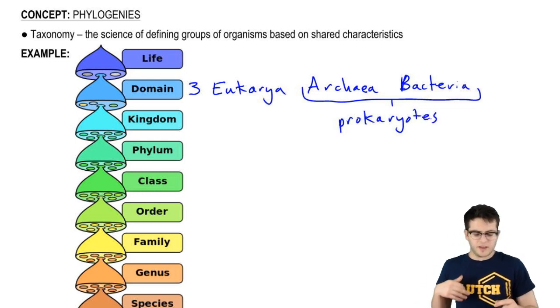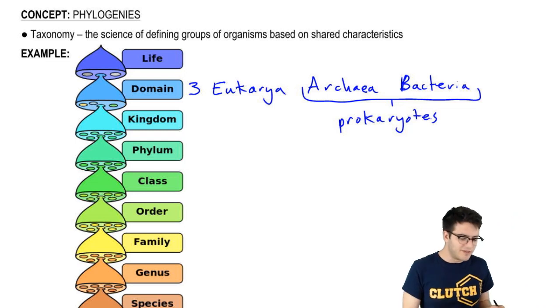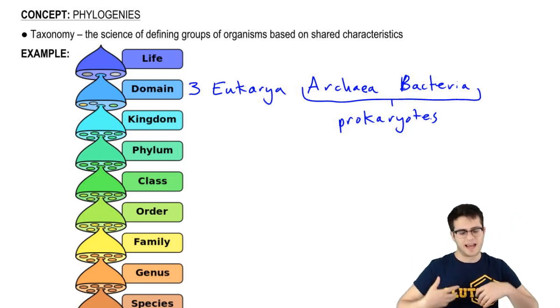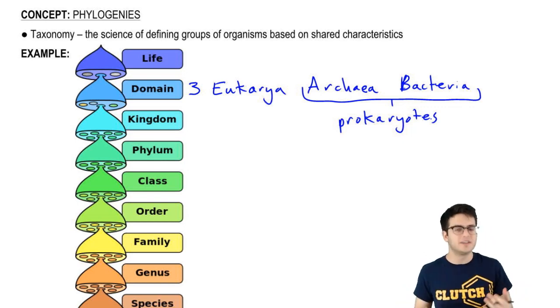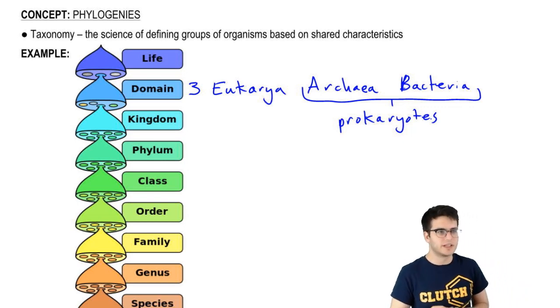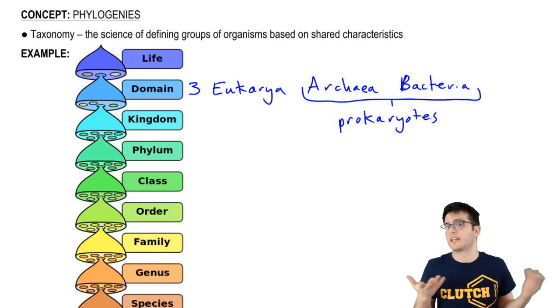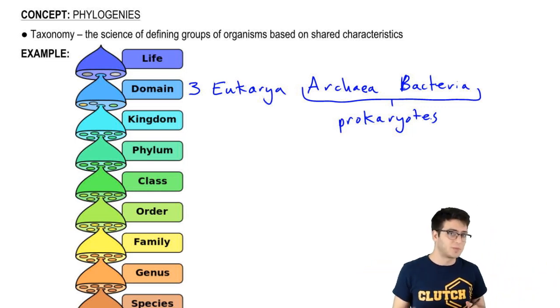There are many more levels of classification and taxonomy. After domain, you have kingdom, which groups organisms into things like the animalia kingdom, which is animals, like you and I. There's also plantae, that's where the plants fall under.